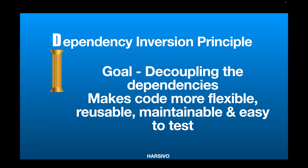Let's understand why we need to use dependency inversion. The main goal is decoupling the dependencies. The high-level module should not depend on the low-level module, meaning your code should be loosely coupled, not tightly coupled. If your UI module knows everything about your low-level module — your networking calls or database layer — then it is tightly coupled code, which is very difficult to maintain, reuse, and even harder to test.